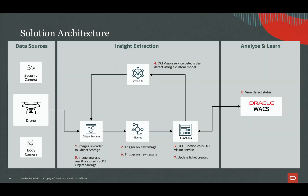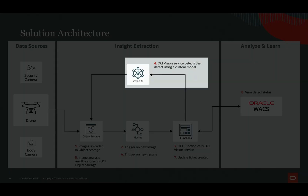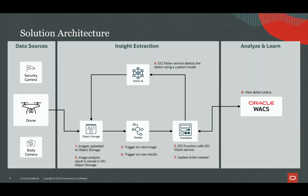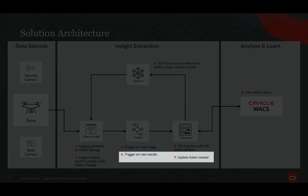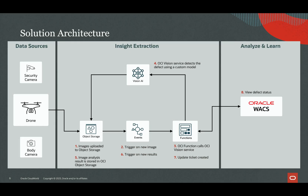OCI Vision detects the defect using a custom model, returns the results to object storage, and an event is triggered to output a ticket with the results. This process can not only save time in inspection, it can help prevent disastrous and costly scenarios.